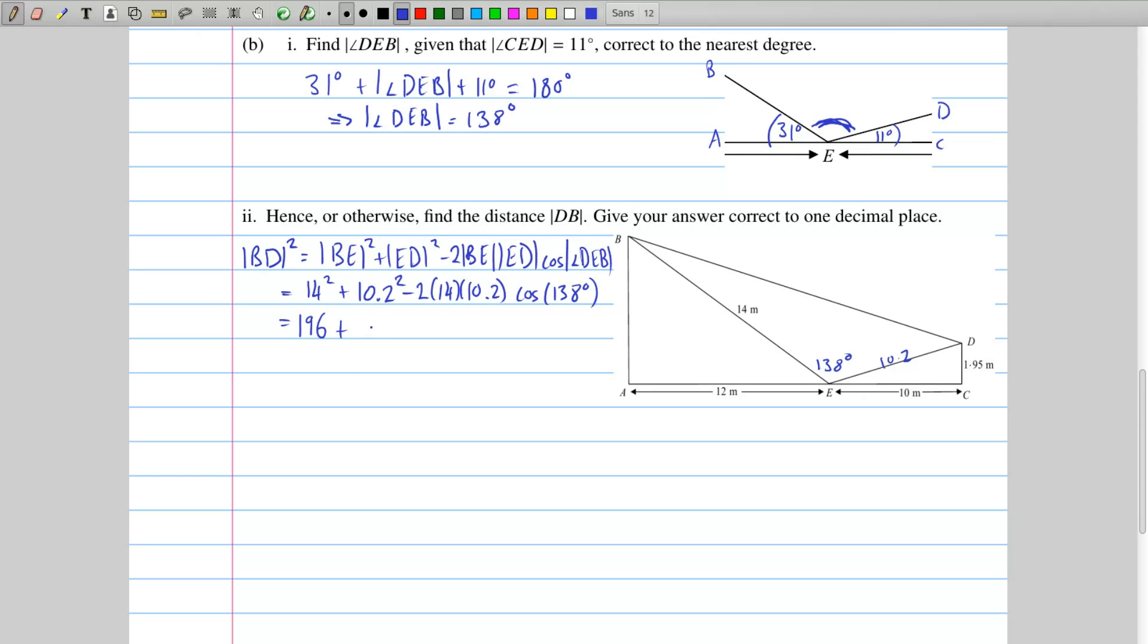10.2 squared is 104.04. The 2 by 14 by 10.2 turns out to be 285.6. Then that cosine turns out to be minus 0.743, or thereabouts. We end up with 512.2408.